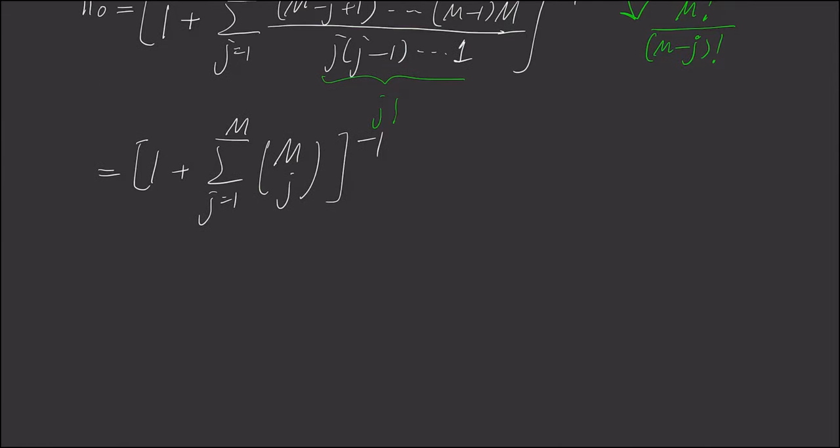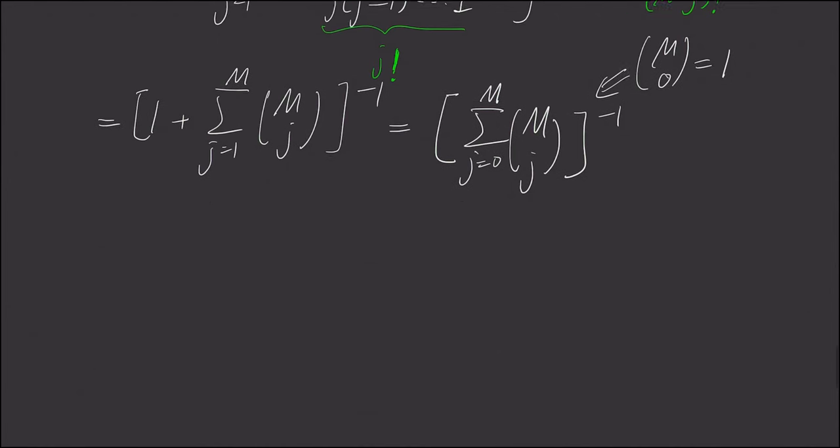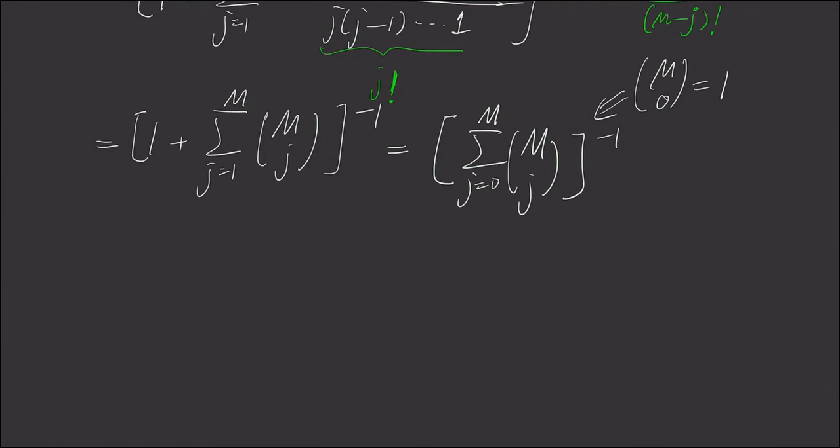And moreover, because m choose zero is one, what happens is we can rewrite this sum in a single summation. And we couldn't help but notice this is nothing but the binomial coefficients.